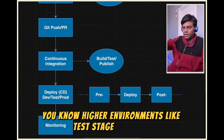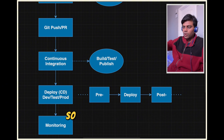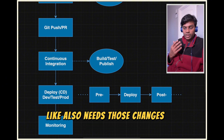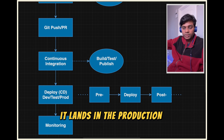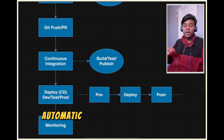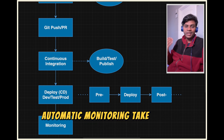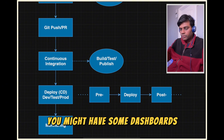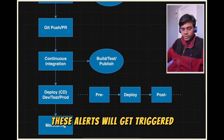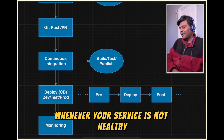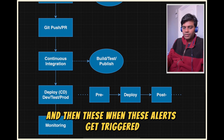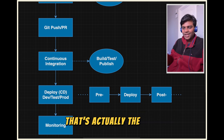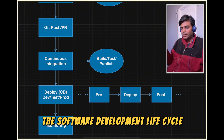Then you push the changes to higher environments like test, pre-prod, and so on. Finally it lands in the production environment. You let automatic monitoring take care of things — you might have alerts and dashboards set up. These alerts get triggered whenever your service is not healthy, and you might get paged. That's the SDLC, the Software Development Lifecycle, as it looks in most cases today.